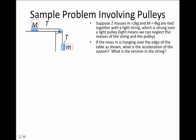If there was no string, we would expect that little m would just fall. Because there is a string, little m isn't free to fall without pulling big M along with it. We can calculate what is the acceleration of the system and what is the tension in the string.